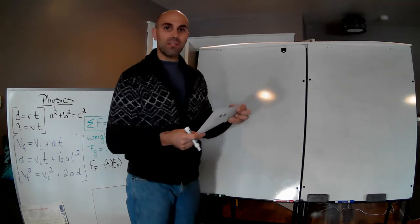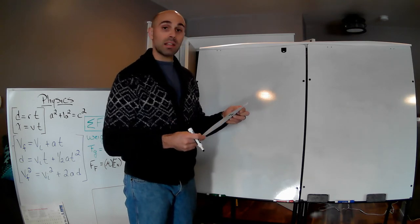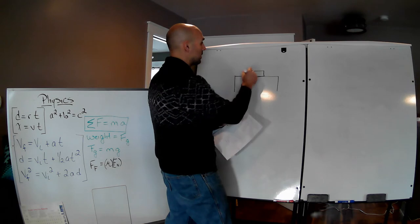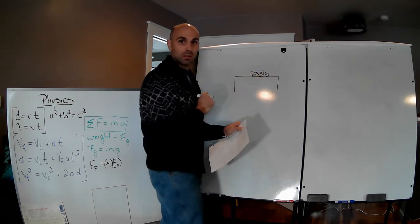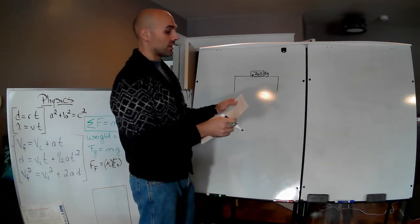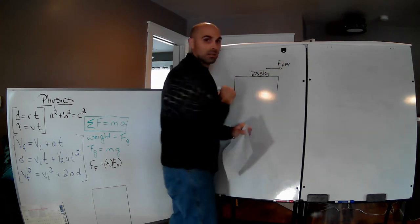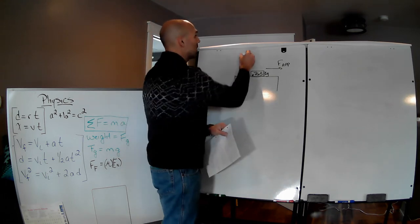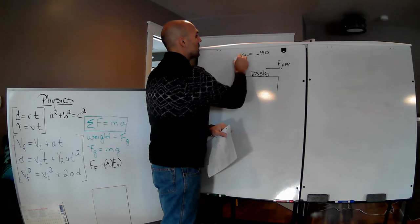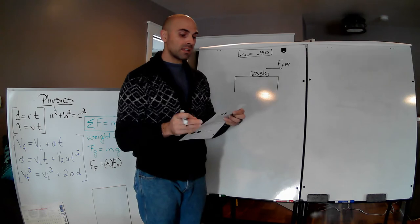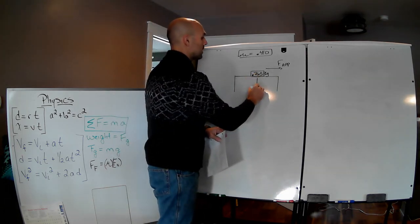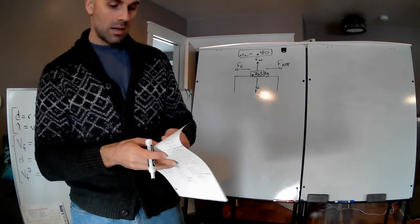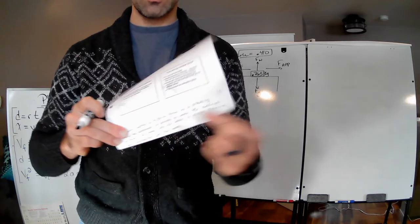Eduardo applies a 4.25 newton force to a 0.765 kilogram book, accelerating it across a table. The coefficient between the book and the table is 0.410. Here is our table, here is the book at 0.765 kilograms. He applies a force — F applied. We draw in the four forces: F of G, F of N, and F of F. Determine the acceleration of the book.